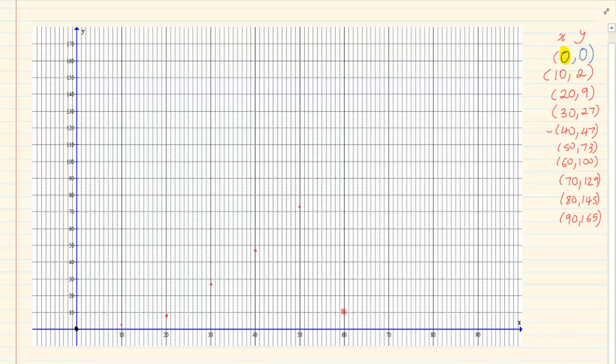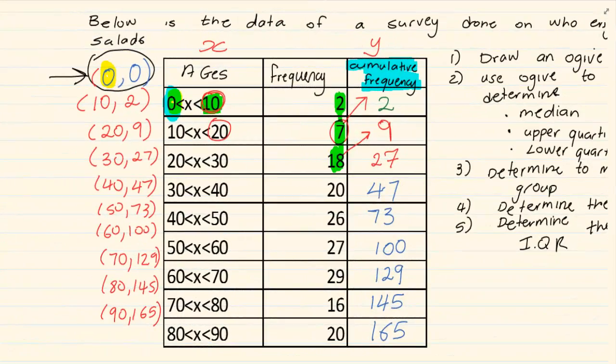Then we have got 60 and 100. Remember, it is just like your normal plotting where your X and your Y have to meet. Then we have got 70 and 129, then 80 and 145, 90 and 165. Now, the last number should tell you what was the total amount of people, or if they were writing a test how many people wrote the test, if they went to a certain place how many people went.